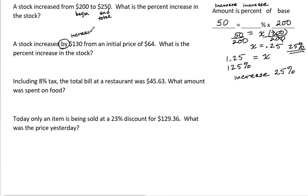That's not the final value of the stock. The final value is $64 plus $130. It's now $194 stock. So increased by, that's just signaling the increase amount, not the total amount. An initial price of $64. So that's the base. Let's bring in our template.